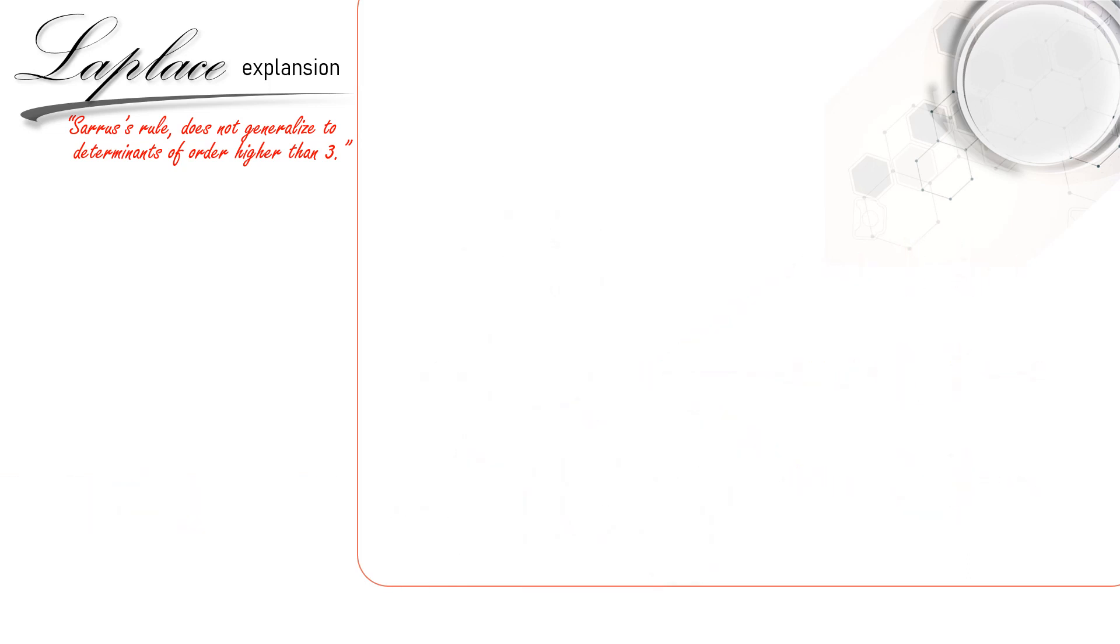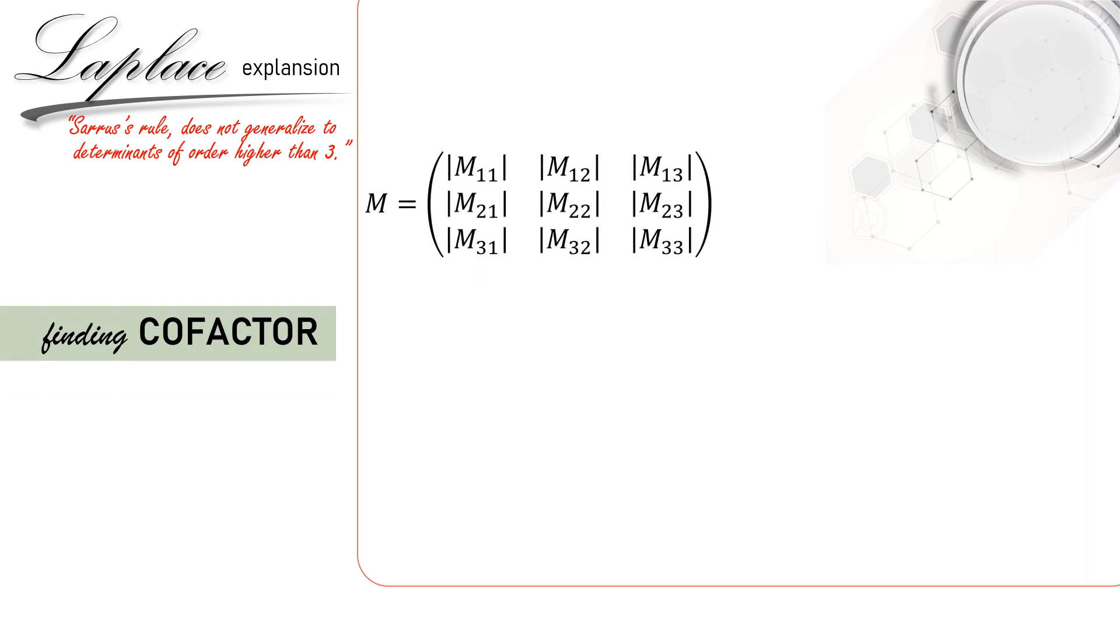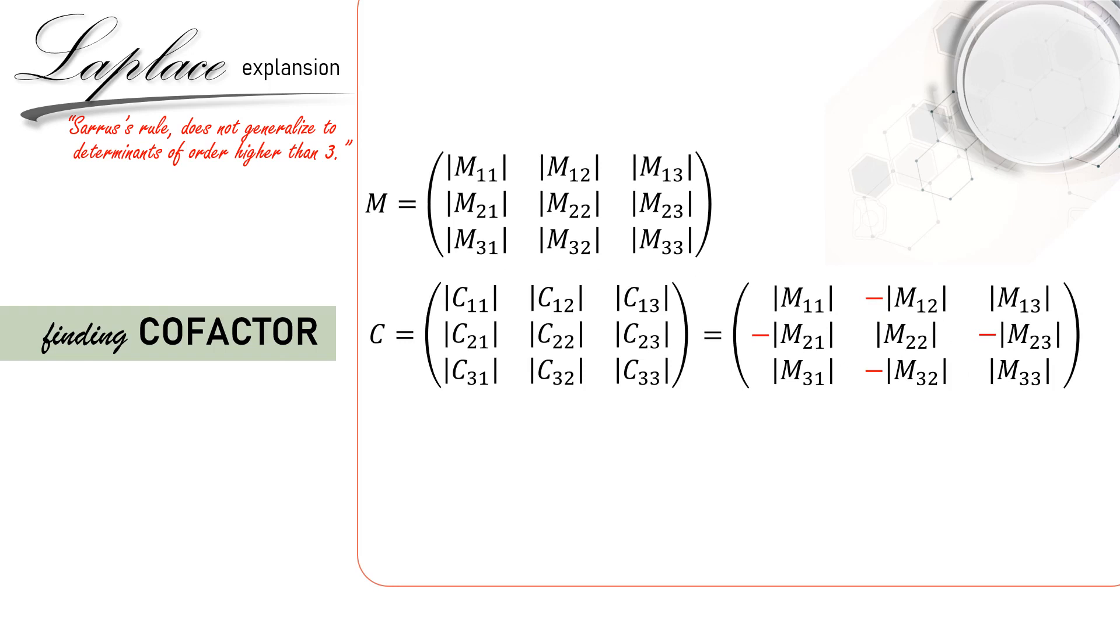After understanding how to find minor, the next step is to find the so-called cofactor. It is not that difficult. From our previous minor matrix here, we will have this cofactor matrix. And the elements can be expressed in terms of minor but with specific signs like this. That's simple. We just have to specify the sign. And the rule is this. I and J here are row and column dimension respectively. Their summation becomes the power for minus 1.